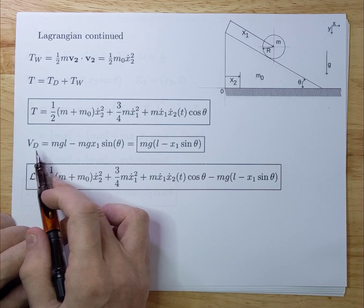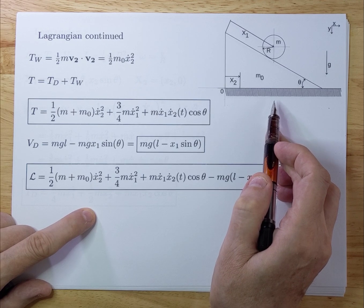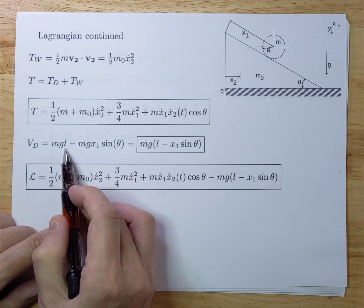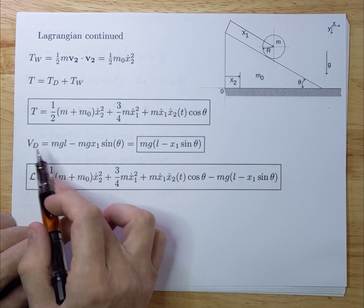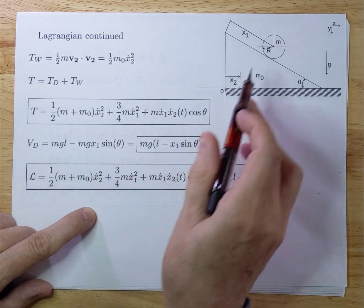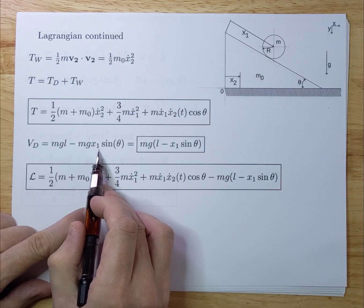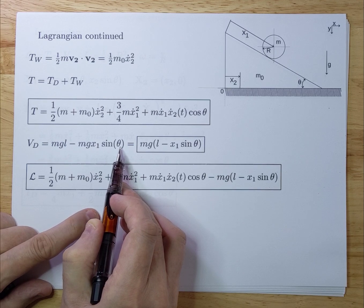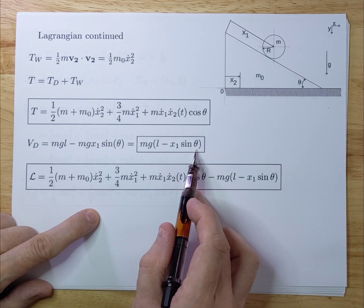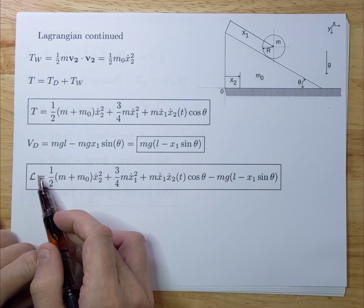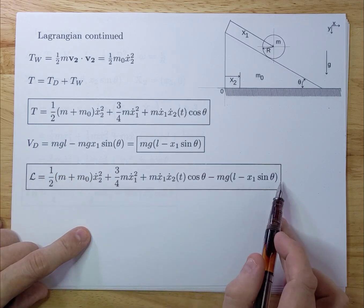Now we need the potential energy. The wedge doesn't have potential energy because it's resting on the frictionless surface. But the disk definitely does. I took a virtual reference L as the zero point — it's just a constant, it doesn't matter. What is important is that as the disc rolls down, the potential energy decreases — hence the minus sign — and it decreases by mg x1 sine theta. So we can rewrite that and generate the full Lagrangian, which is T minus V, and we get the Lagrangian.